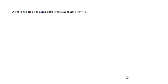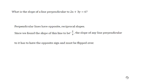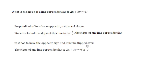What is the slope of a line that is perpendicular to 2x plus 3y equals 6? Perpendicular lines have opposite reciprocal slopes. Since we found the slope to be negative two-thirds, the perpendicular slope must have the opposite sign and be flipped over. So the slope of any line perpendicular to it is the opposite reciprocal of negative two-thirds, which is positive three-halves.